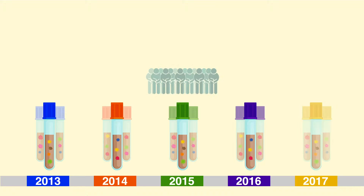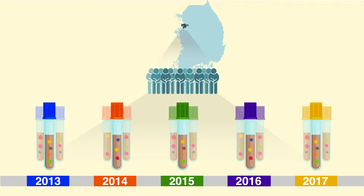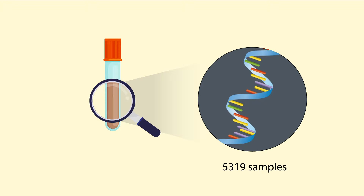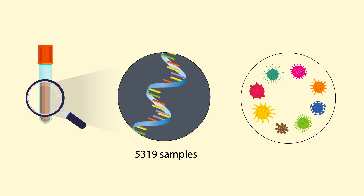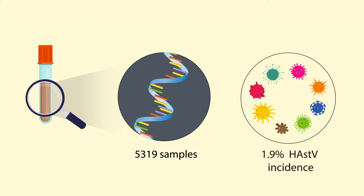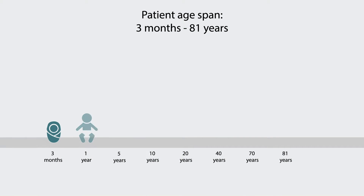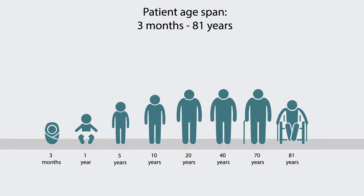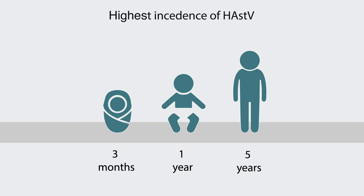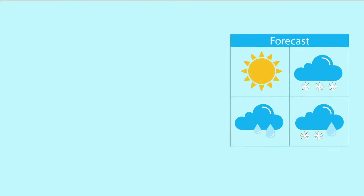Stool samples from patients with acute gastroenteritis in Hwaseong, Korea, were collected from 2013 to 2017. Viral RNA from 5,319 samples was analyzed, yielding an occurrence rate of human astrovirus of 1.9%. Although the age span of patients ranged from 3 months to 81 years, incidence of human astrovirus was highest in children under 5.